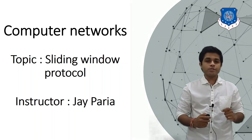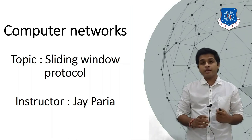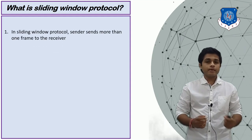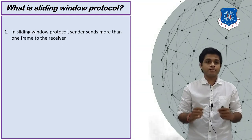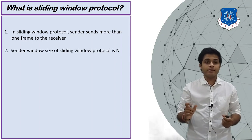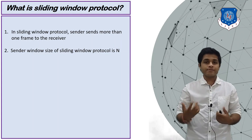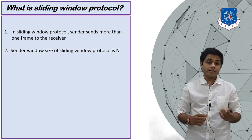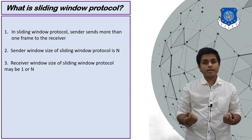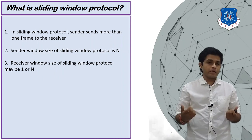Hi everyone, this is Jay, your instructor for computer networks. In this session we are going to see the sliding window protocol. In the sliding window protocol, the sender sends more than one frame to the receiver. The sender window size is N, meaning the sender can send three, five, or nine frames at a time depending on its capacity. The receiver window size can be either one or N.